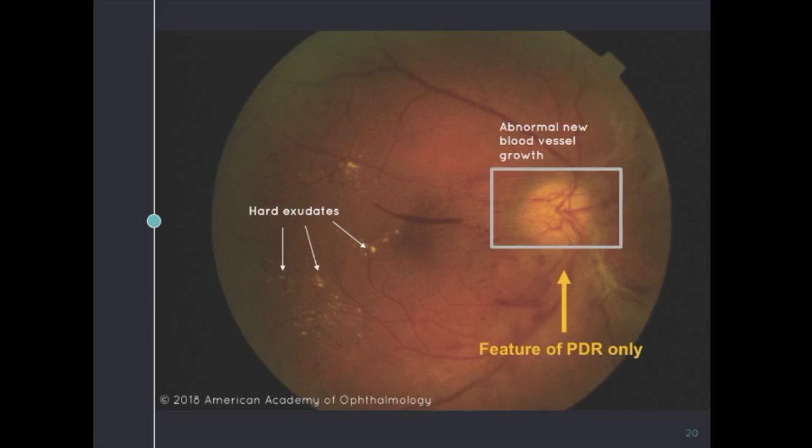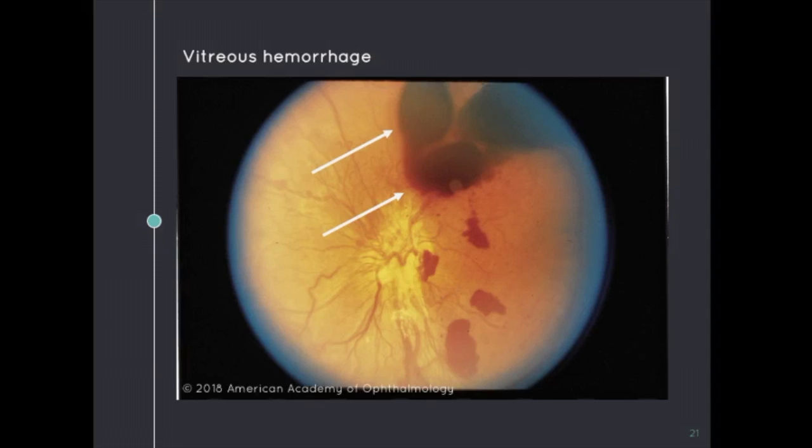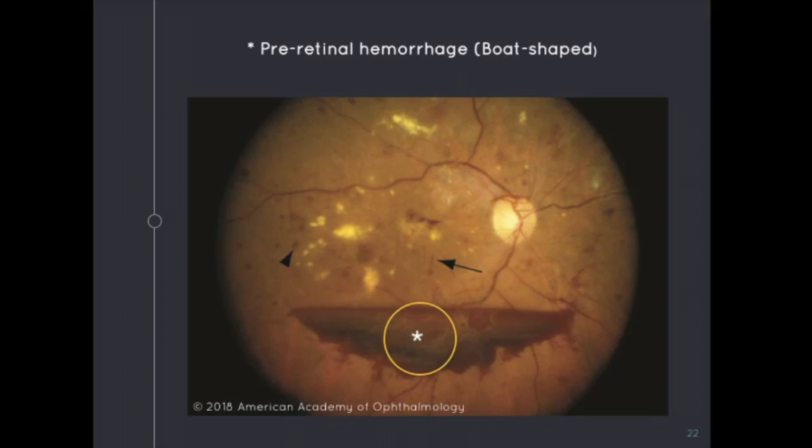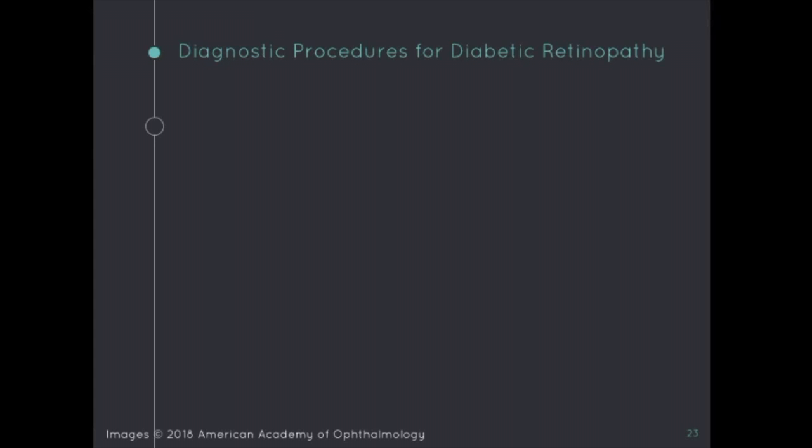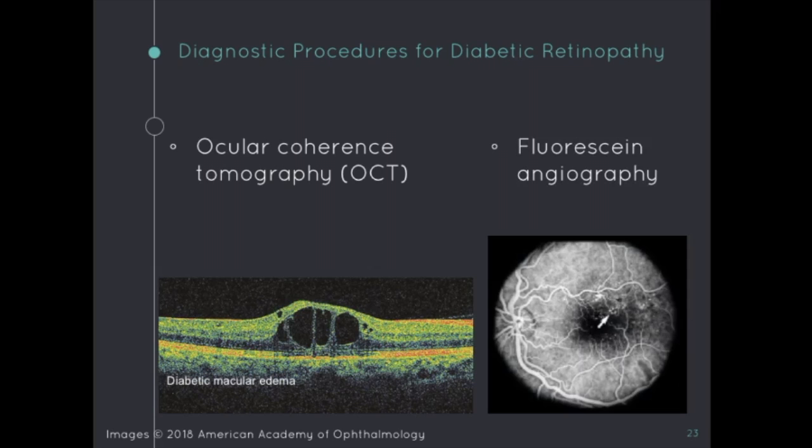Other findings seen in PDR include vitreous hemorrhages, as well as boat-shaped pre-retinal hemorrhages labeled here by the asterisks. Diagnostic procedures useful in determining the severity of diabetic retinopathy are optical coherence tomography, abbreviated as OCT, and fluorescein angiography. Since fluorescein angiography requires IV contrast, OCT is more commonly used.